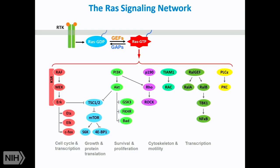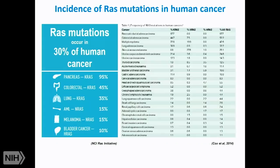Because RAS can control cell proliferation, cell survival, and cell growth simultaneously, it is the ideal oncogene. If you activate RAS, you can turn on all of these processes and uncouple cell proliferation and survival from mitogen controls — hallmarks of cancer. RAS genes are indeed one of the most frequently mutated oncogenes in human cancer: 30% of all human cancers carry mutations in one of the RAS genes.